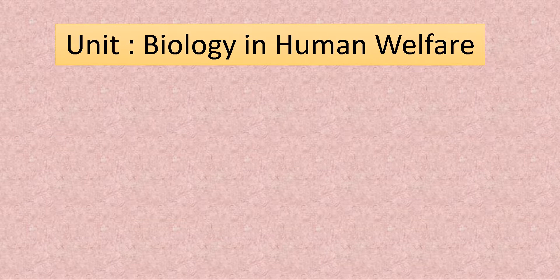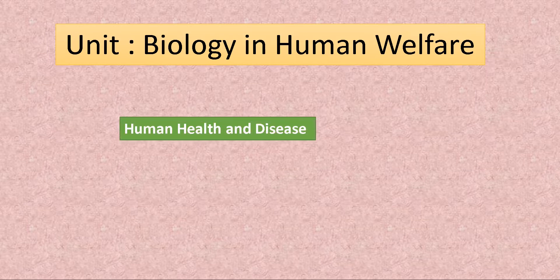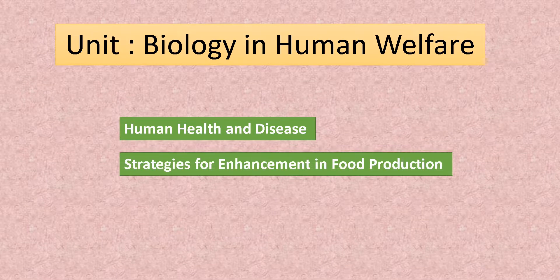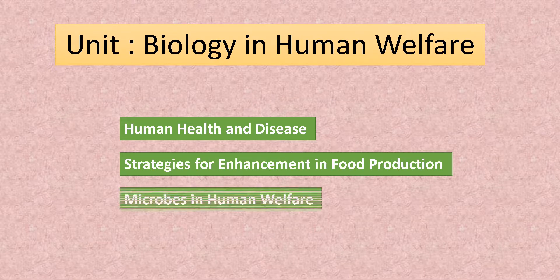Biology in Human Welfare is the third unit of Class 12 Biology, and in this unit there are three chapters. The first chapter is Human Health and Disease, the second chapter is Strategies for Enhancement in Food Production, and the third chapter is Microbes in Human Welfare. Through this video I will be discussing the important topics you need to cover from these three chapters.